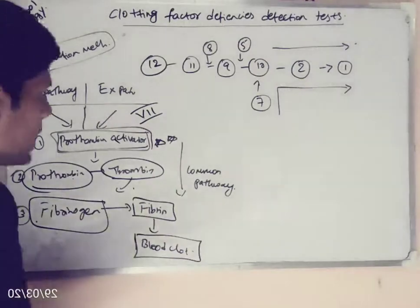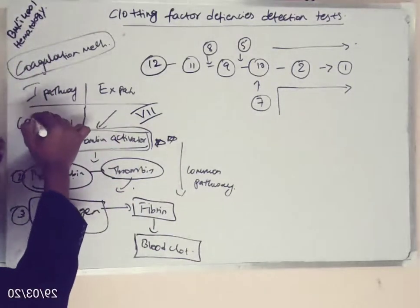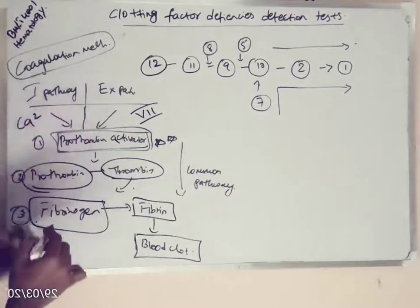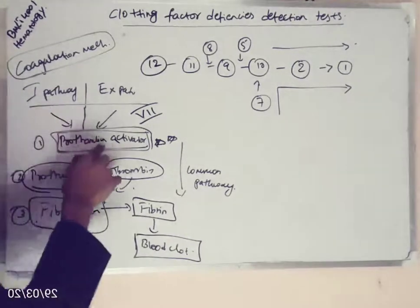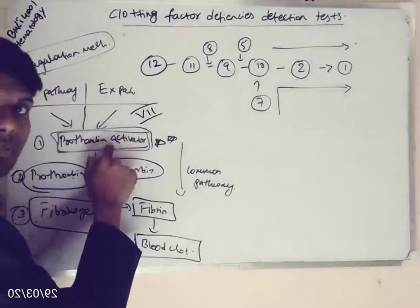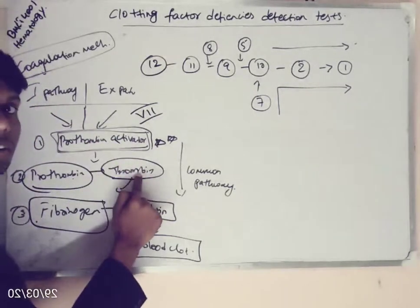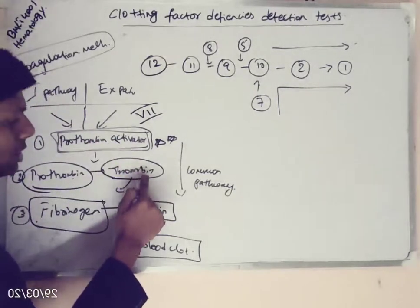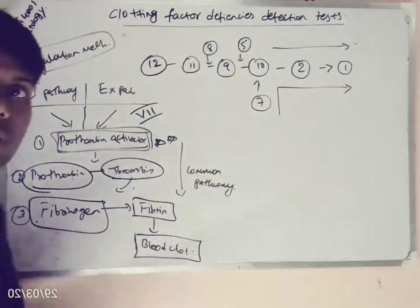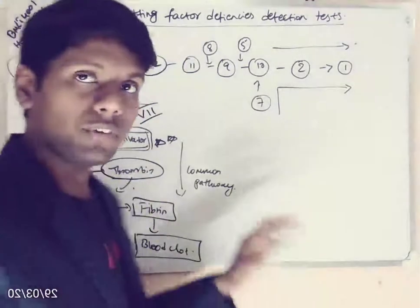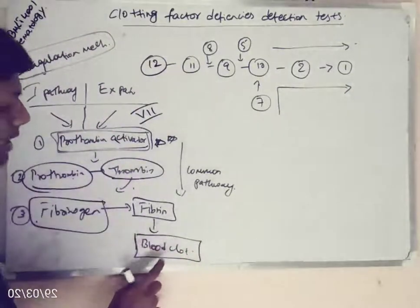In the intrinsic pathway, one of the clotting factors is clotting factor 4, which is calcium. If calcium is removed, prothrombin activator cannot be formed. Without prothrombin activator, prothrombin cannot convert to thrombin. Without thrombin, you cannot have fibrin, and without fibrin, your blood won't clot. So deficiency of any one of the clotting factors results in increased bleeding.